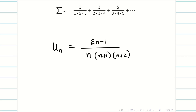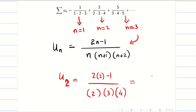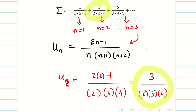Let us write the nth term and do a cross-verification. Suppose we have a doubt whether we are correct or not — go back to the problem. For n=2 (the second term): the numerator gives 2×2−1 = 3, and the denominator gives 2 × (2+1) × (2+2) = 2×3×4. We get 3 divided by 2, 3, 4 — which matches the second term exactly. If you get a match, you are correct; otherwise, go and verify.